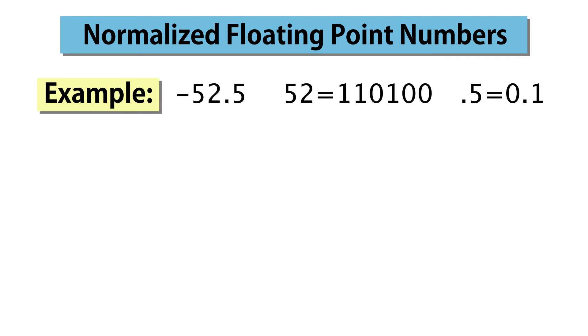Putting the two parts together, the binary equivalent of minus 52.5 is minus 110100.1. If there had been a repeating binary expansion to the right of the binary point, we'd just have noted that at this point. We'd need that fact later.